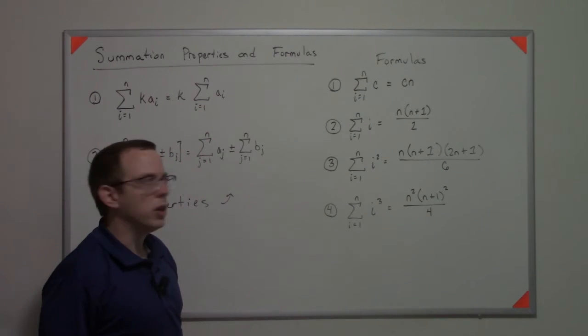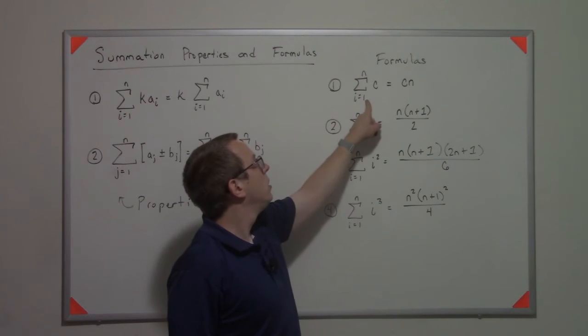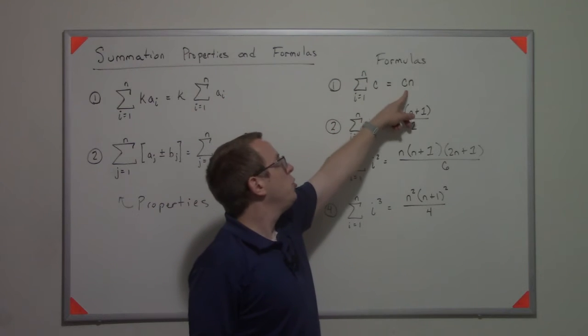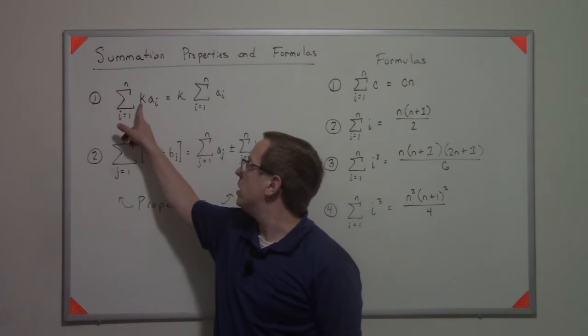One of the formulas you're going to get is that if you sum up a constant n times—one, two, three, four, five, six, all the way to n—you get that constant times n. And that's a natural result from this.